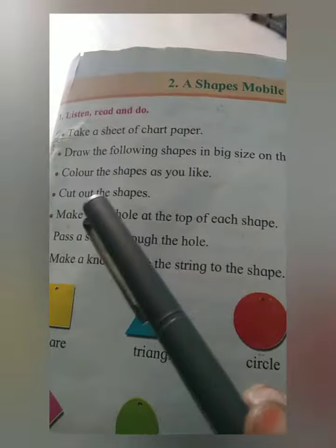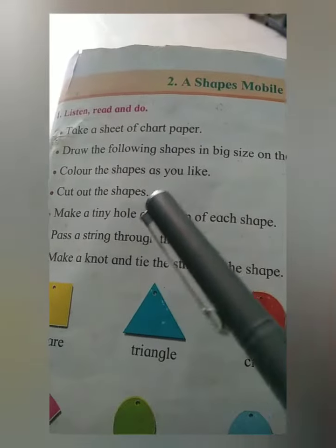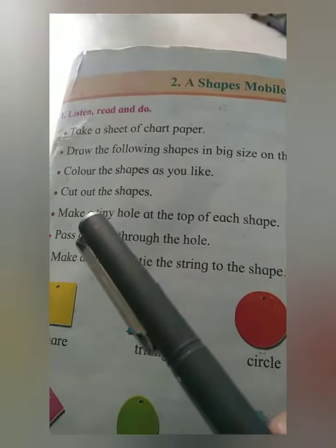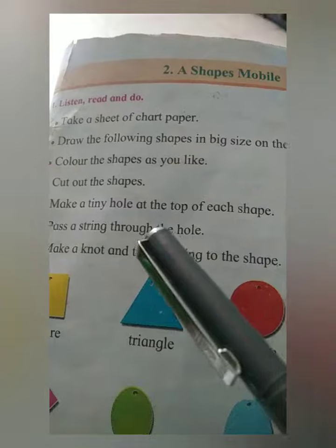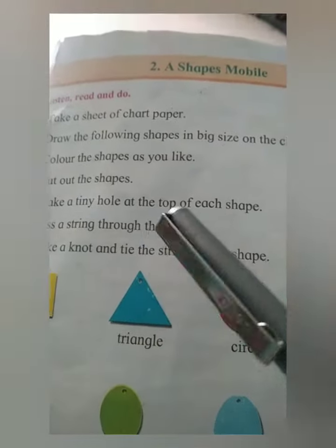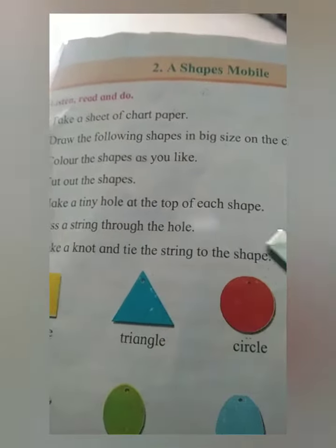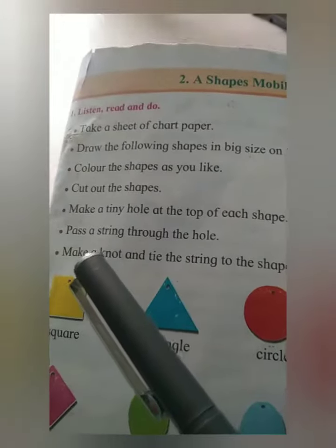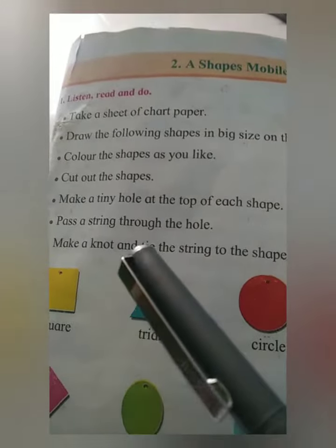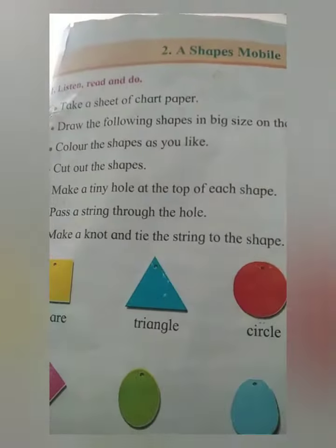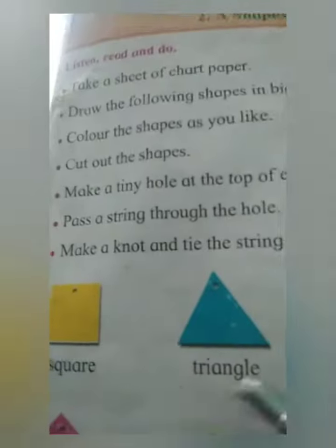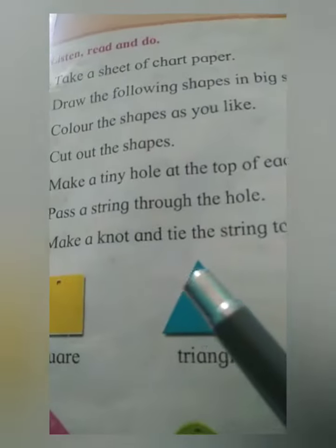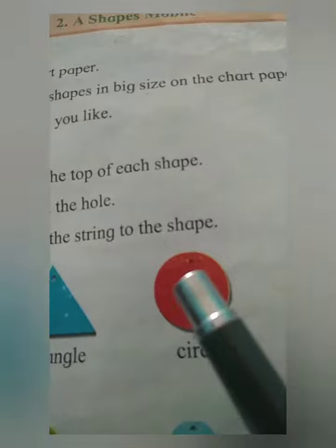Color the shapes as you like. Cut out the shapes. Make a tiny hole at the top of each shape. Pass a string through the hole, make a knot, and tie the string to the shapes.